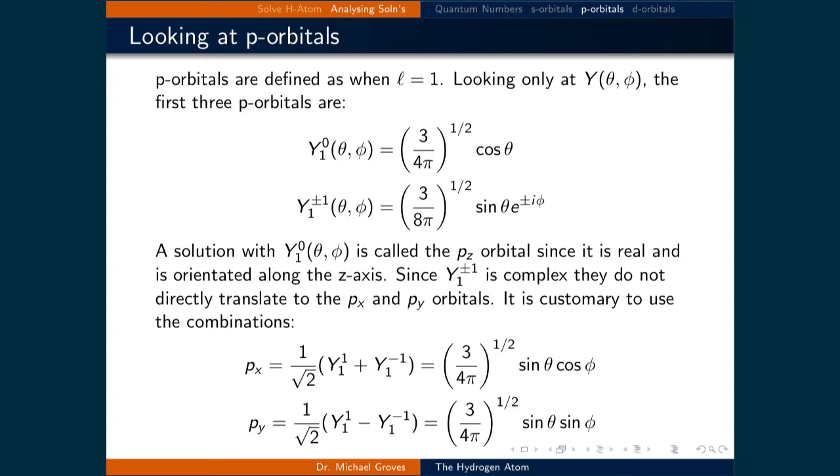The plus or minus is related to whether m is plus 1 or minus 1. The solution to Y is the p_z orbital, since it is real and oriented along the z-axis.